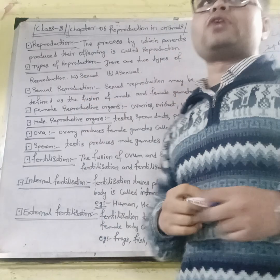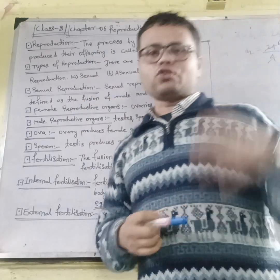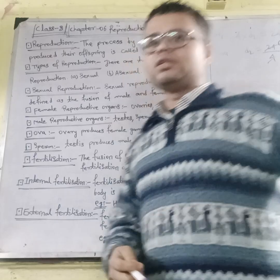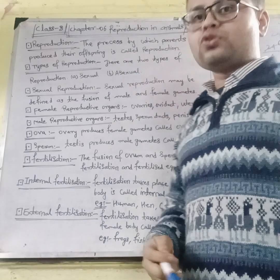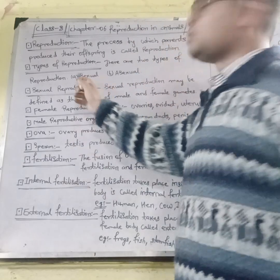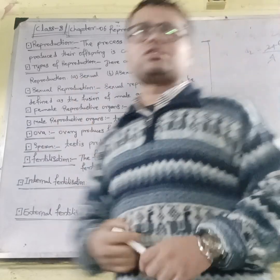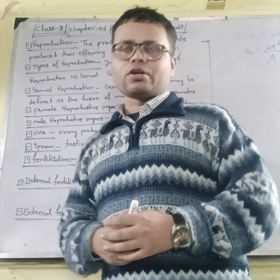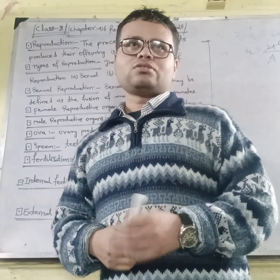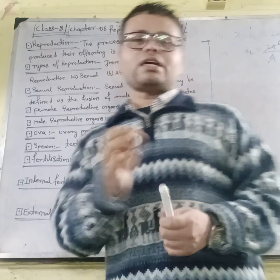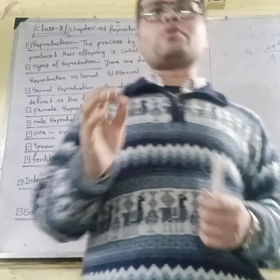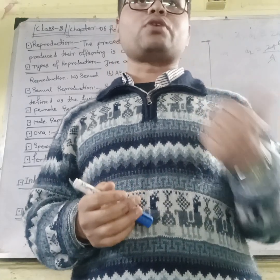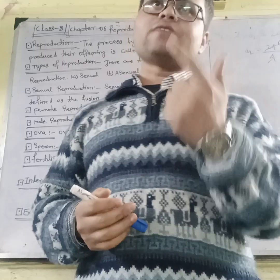What are the types of reproduction? There are two types of reproduction: sexual reproduction and asexual reproduction. These are the only two types.